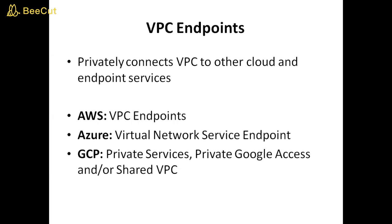VPC endpoints: privately connects a VPC to other cloud and endpoint services. AWS: VPC endpoints. Azure: virtual network service endpoint. GCP: Private Services — Private Google Access and/or Shared VPC.